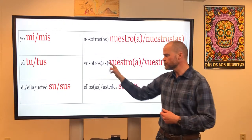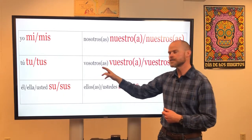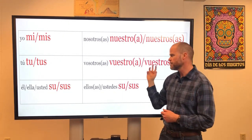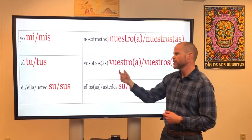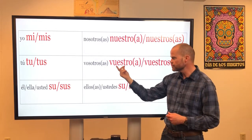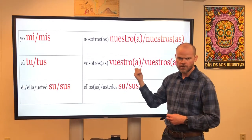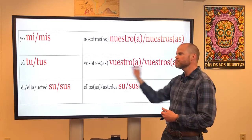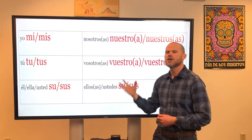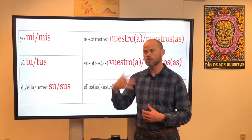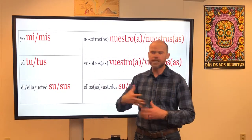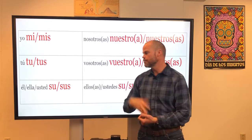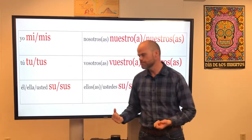Muy bien. So the vosotros form also corresponds to both number and gender. We have vuestro, vuestra, vuestros, and vuestras. And all of these are going to mean "your," but we're talking about a group of people.